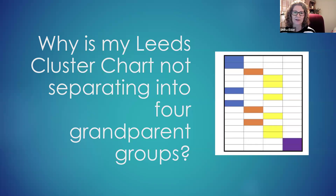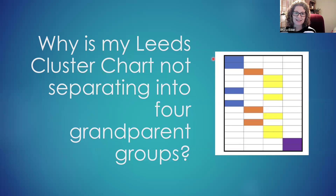Here is what a Leeds chart is supposed to look like — with four distinct groups — and this is what we are hoping to find. But when it doesn't, we need to look and see what else might be going on.